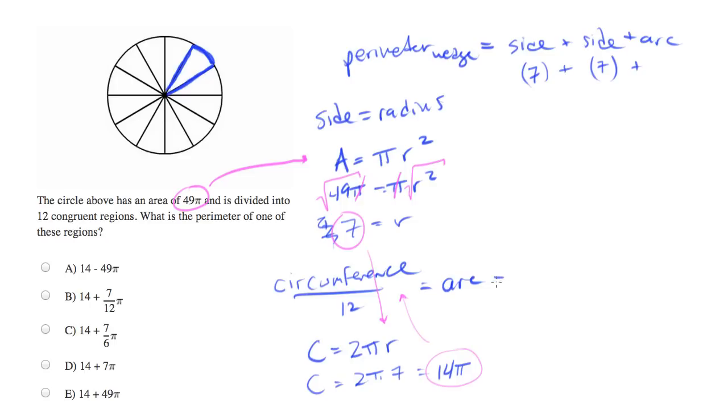And what we'll end up with is 14 pi over 12 equals the arc.